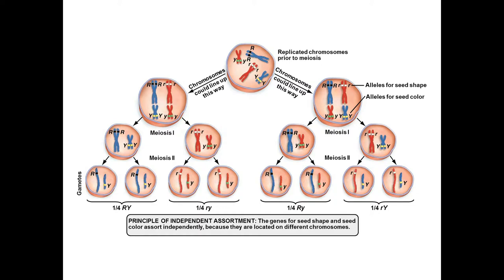Picking up with two principles from chapter 14: the principle of independent assortment and the principle of segregation. These are concepts that tie in with meiosis.